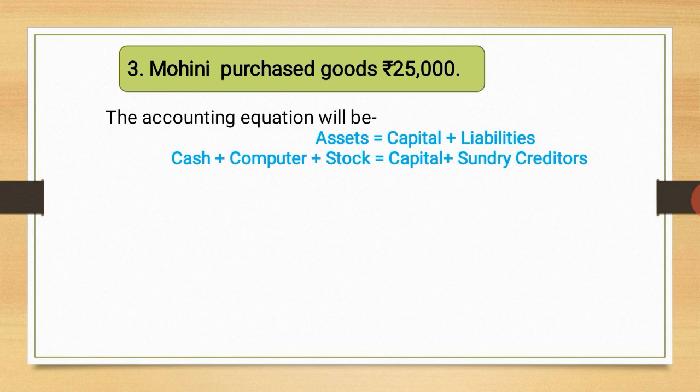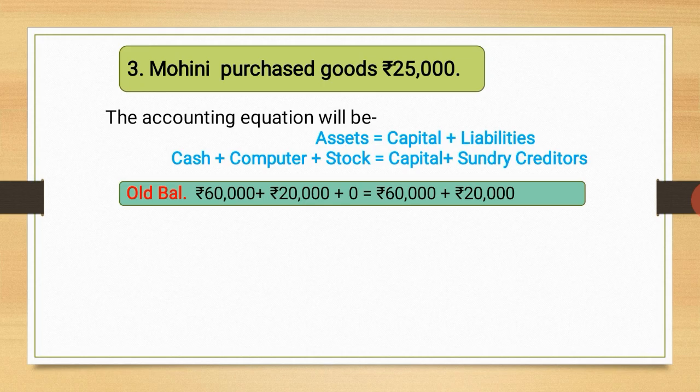For the third transaction — Mohini purchased goods for Rs. 25,000, paying cash — the equation becomes: Cash + Computer + Stock = Capital + Sundry Creditors. As per the previous balance before this transaction: cash was Rs. 60,000, computer Rs. 20,000, and stock was zero. Capital was Rs. 60,000 and creditors were Rs. 20,000.